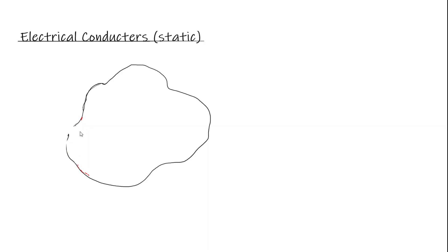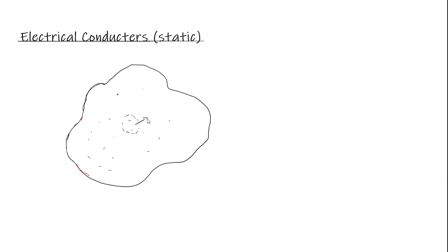Let's consider any charges in this electrical conductor. We already found the field is zero inside. If charges were grouped together inside, they'd repel each other — that contradicts a static field. What if charges spread out along some interior area? If we consider a Gaussian surface there, because there's positive charge inside, the flux would be positive, which means there are E-fields inside — a contradiction. So the only way charges can be distributed is along the outside surface.